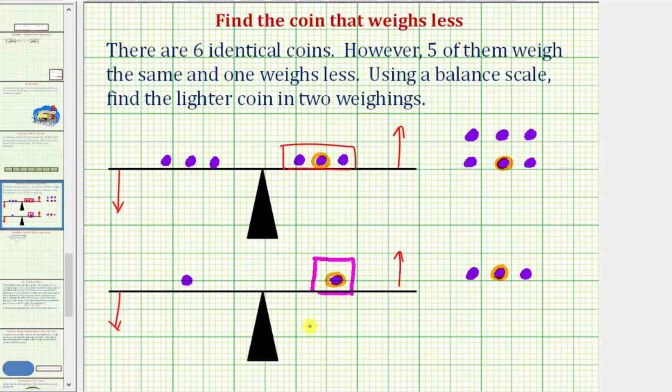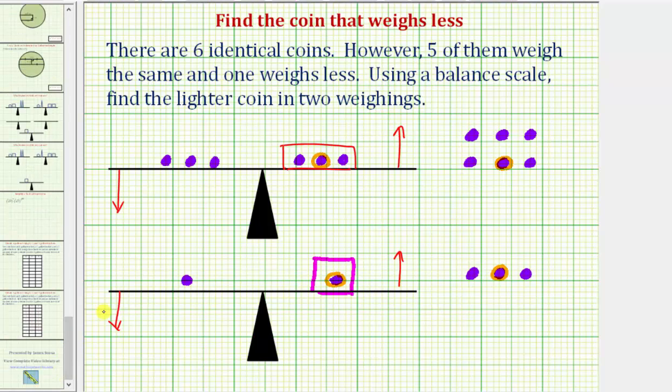So regardless of what happens on the second weighing, we can still identify the lighter coin in a total of two weighings. I hope you found this helpful.